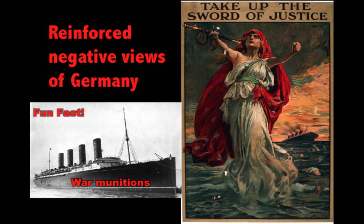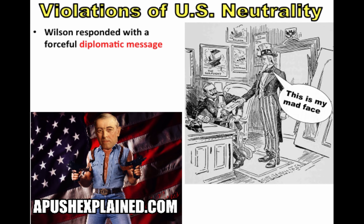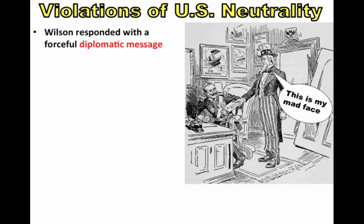After the Lusitania sinking, America was outraged and Wilson responded with forceful diplomatic messages threatening Germany and threatening to cut off diplomatic relations — as depicted in the political cartoon shown. Germany did not want a war with the United States, as they already had their hands full with the Allies. So there was a temporary pause in German u-boat attacks, with Germany promising they would not sink any more ships without warning.